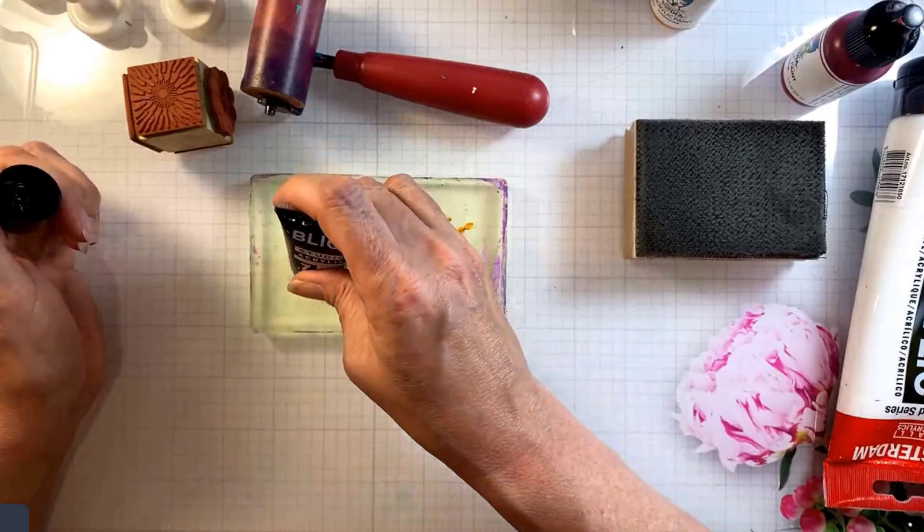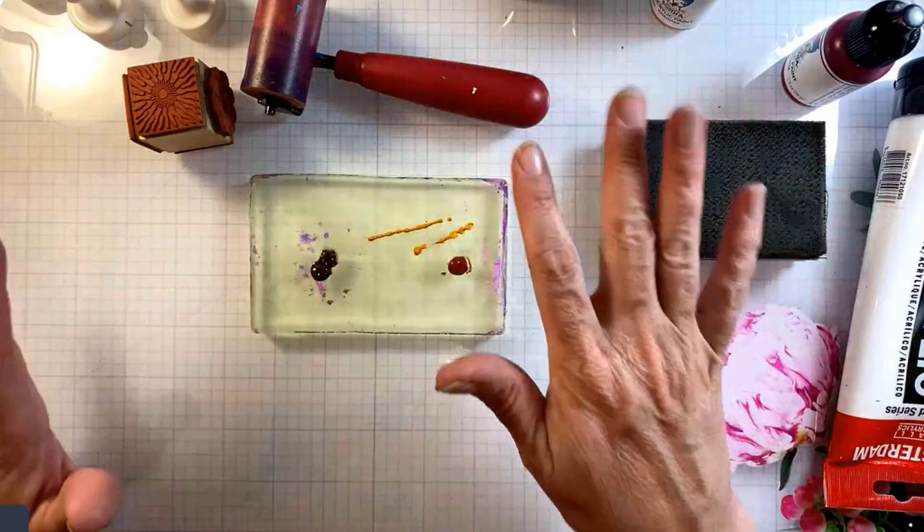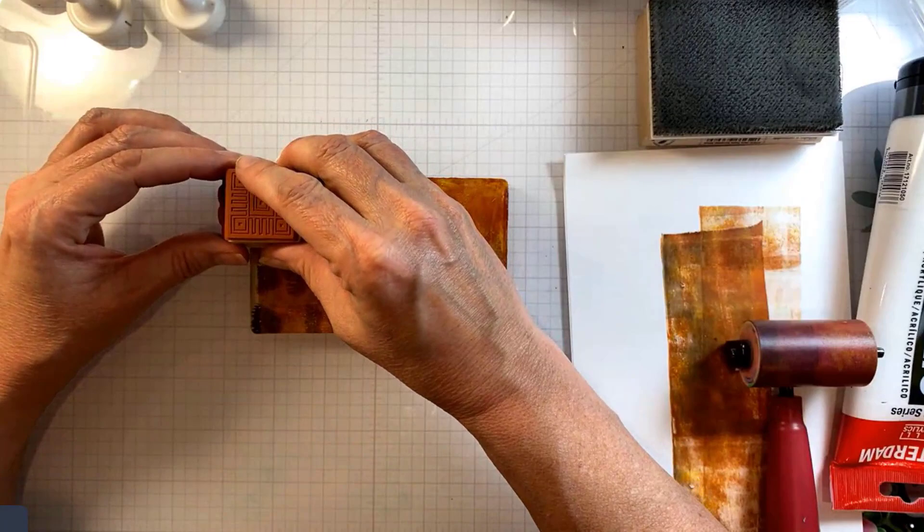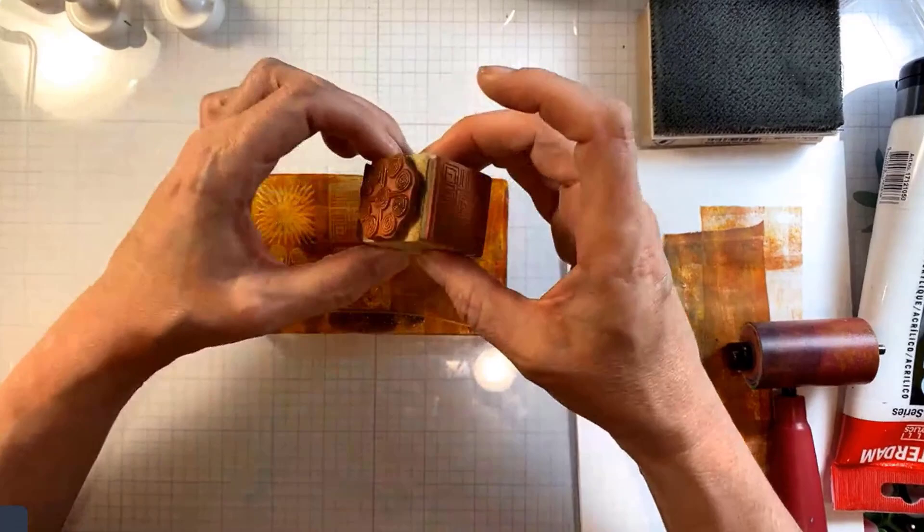To do that you'll want to start with your warm neutrals. I have a rust color, a brown, and kind of an ochre color. These are Blick studio paints and then I just stamp to remove paint from the first layer on my gel press.